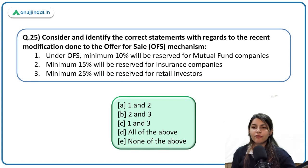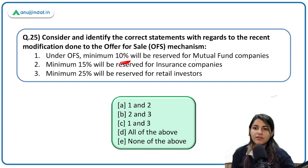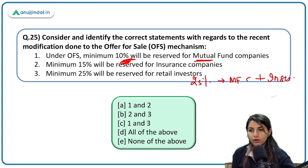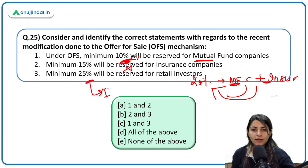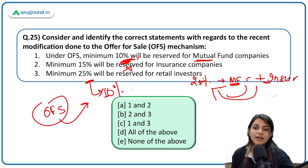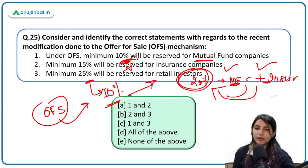Recent modifications under OFS mechanism: minimum 10% is reserved for mutual fund companies — incorrect; 25% is reserved for mutual fund companies and insurance companies together. Minimum 15% is reserved for insurance companies — incorrect; there is no such separate reservation. Minimum 25% reserved for retail investors — incorrect; it is 10% for retail investors. So minimum 10% is reserved for retail investors and 25% is reserved for mutual fund companies and insurance companies together. All given statements are incorrect.